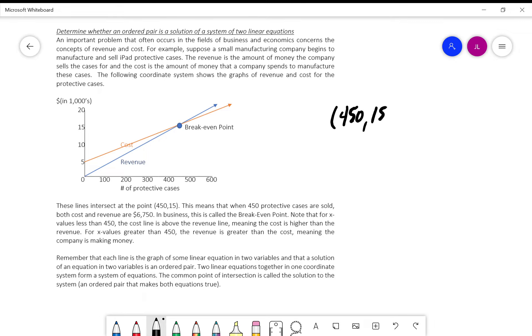The lines intersect at the point 450, 15, meaning when 450 protective cases are sold, both cost and revenue are $6,750. This is the break-even point. Below that, if we sell 400, we're looking at a loss. To the right of the break-even point, if we sold 600, the distance between revenue and cost would be our profit.